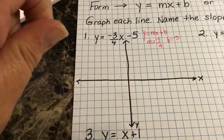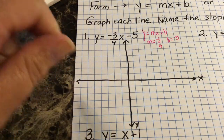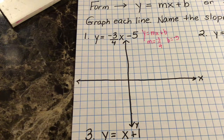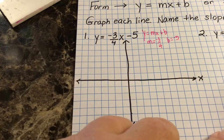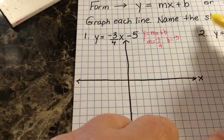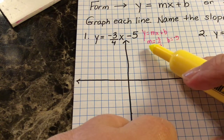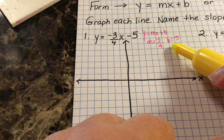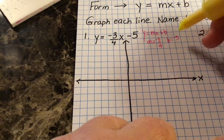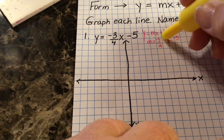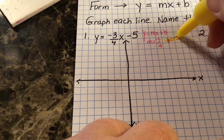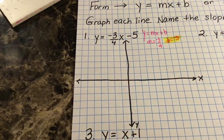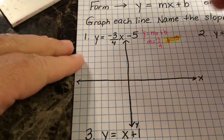When graphing lines using slope-intercept form, ask yourself: which comes first alphabetically, m or b? B comes first alphabetically, so that's where you start graphing — you graph your y-intercept first.